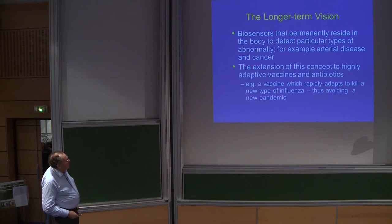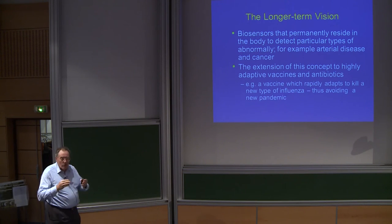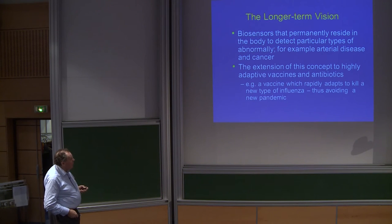The long-term vision is, for example, the use of biosensors which permanently reside within the body to detect particular types of abnormality, for example arterial disease and cancer. Another example is the extension of the concept of highly adaptive vaccines and antibiotics, so that the vaccine can rapidly adapt to get a particular type of influenza. We're actually seeing that coming through now, even industrially.